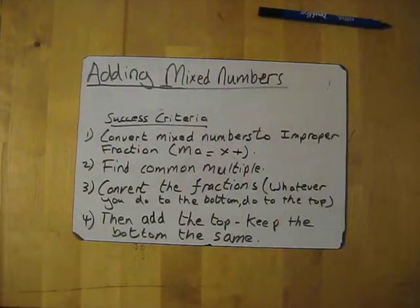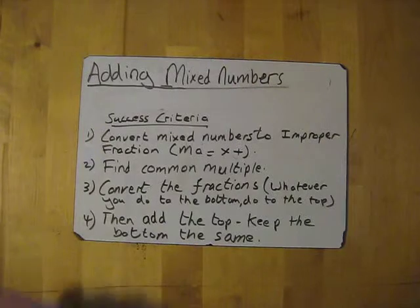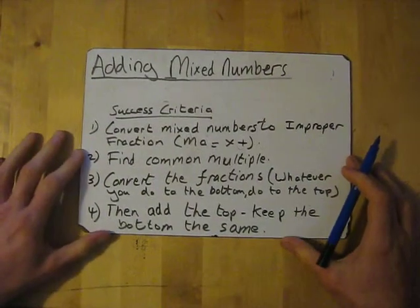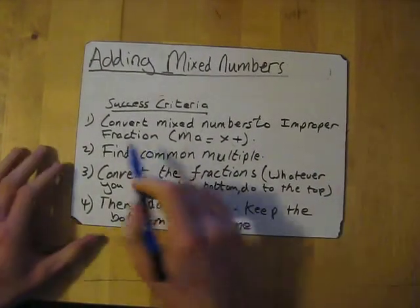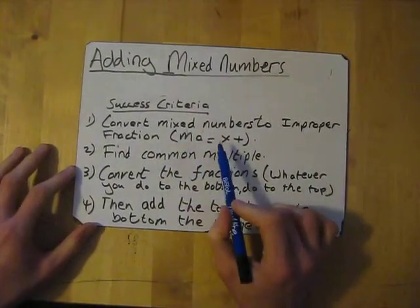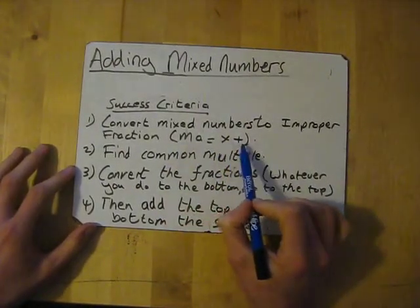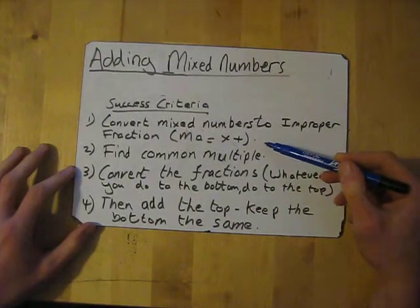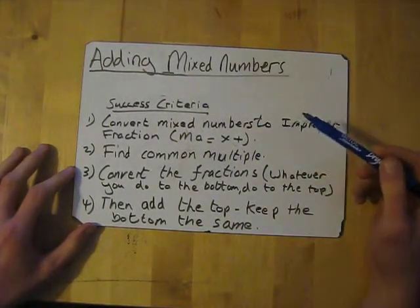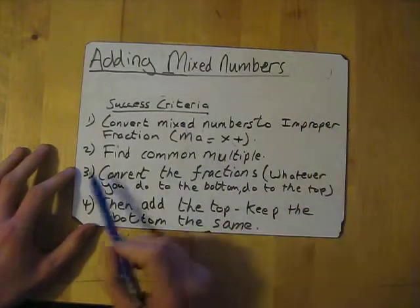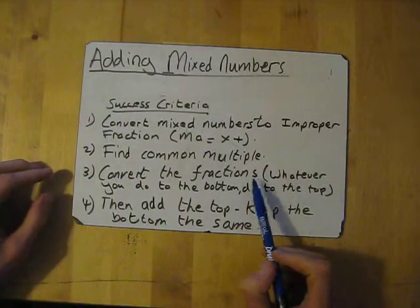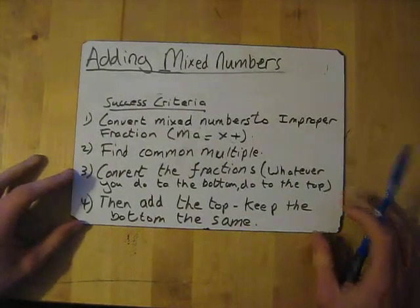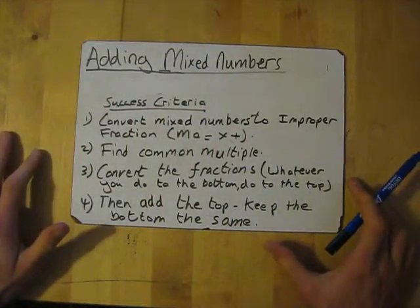We're going to have a go at adding mixed numbers. The success criteria is very similar to adding fractions. You basically need to convert any mixed numbers into improper fractions using MA — multiply and add. There's a little video on it above if you want a quick look. Then find the common multiple for the improper fractions, convert them so whatever you do to the bottom you do to the top, then add the top and keep the bottom the same.